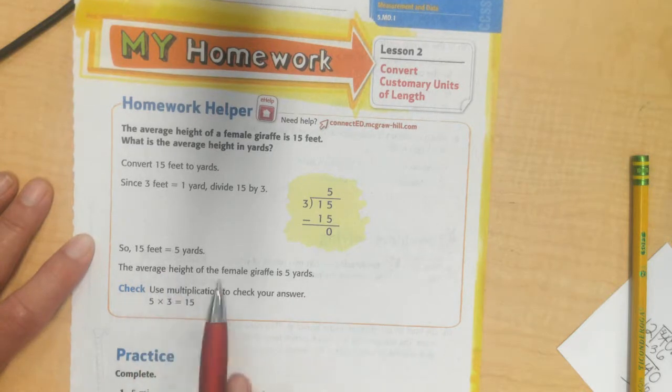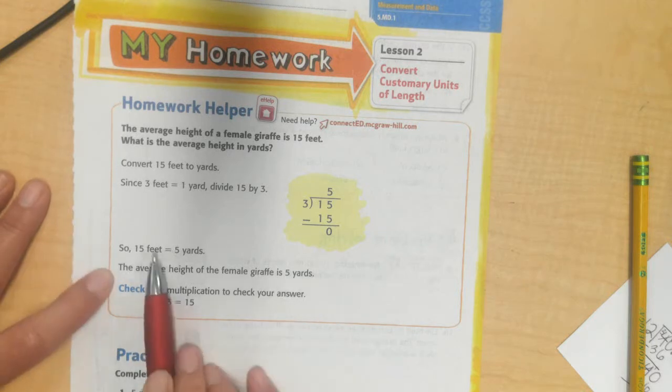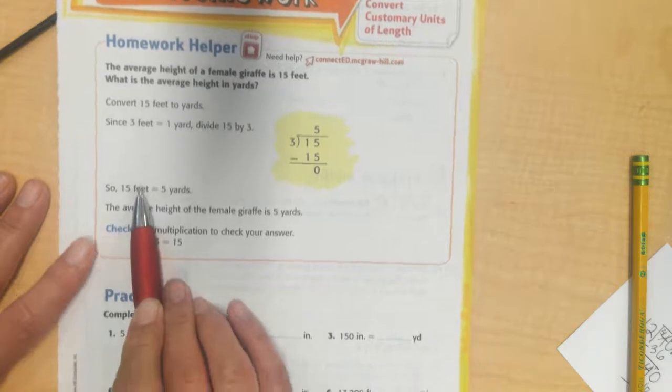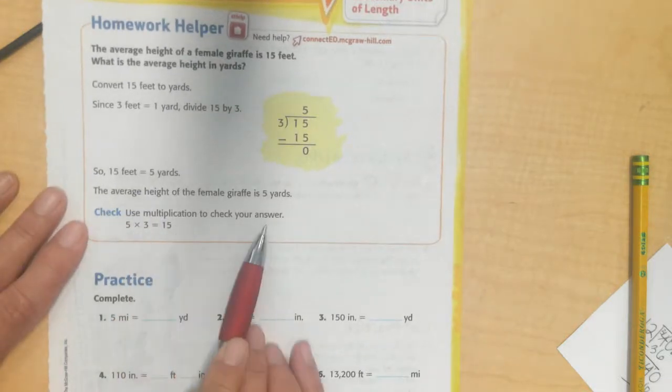The average height of a female giraffe is 5 yards. Pretty tall, huh? Can you imagine being 15 feet tall? Couldn't even get through the door. So, we're going to use multiplication to check our answer.